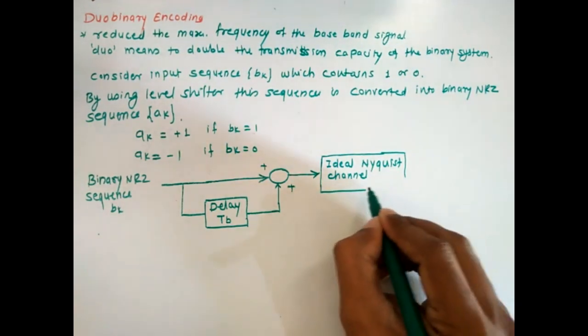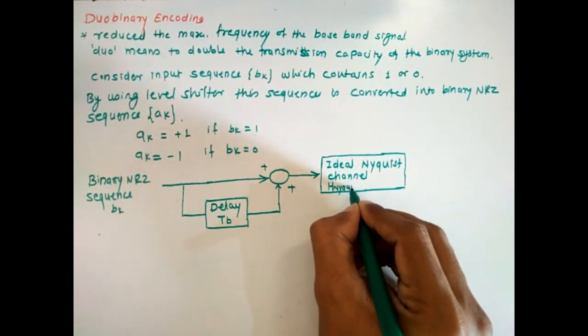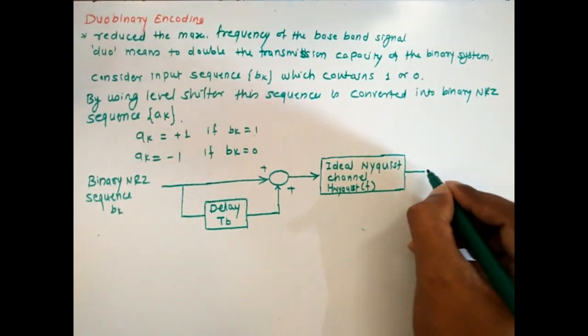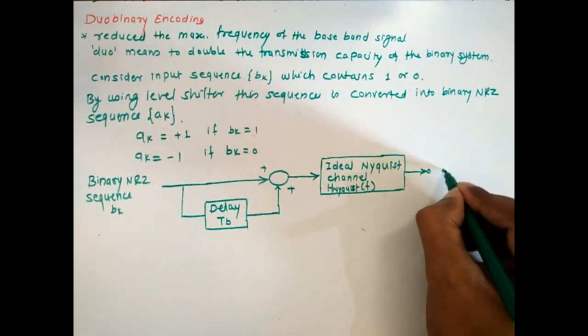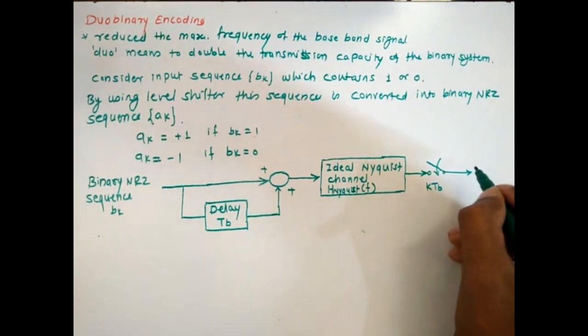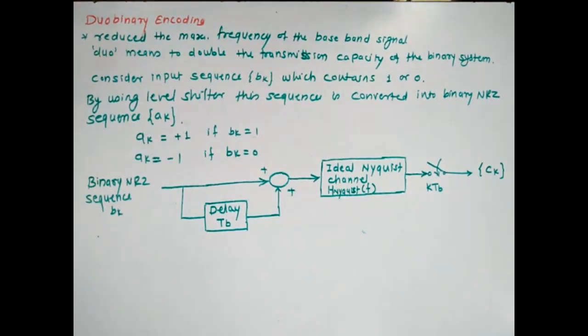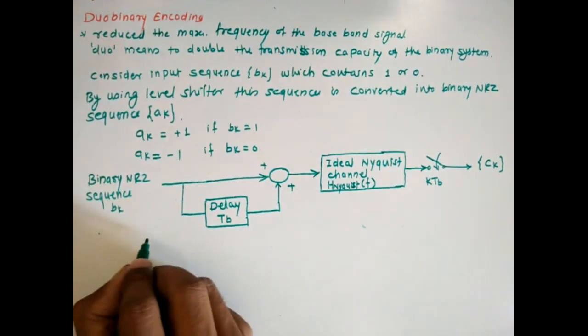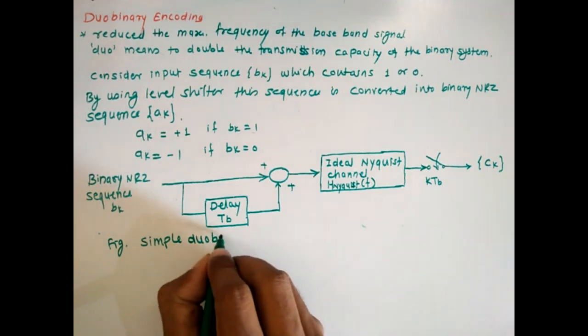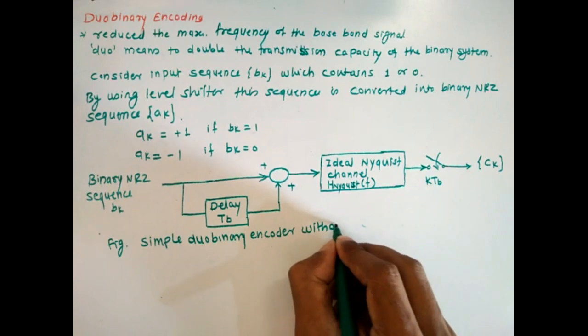The channel with response H Nyquist of f, then we are having a switch for kTb, and here we are getting the output ck. So this is a block diagram of a simple duo binary encoder without pre-encoder.